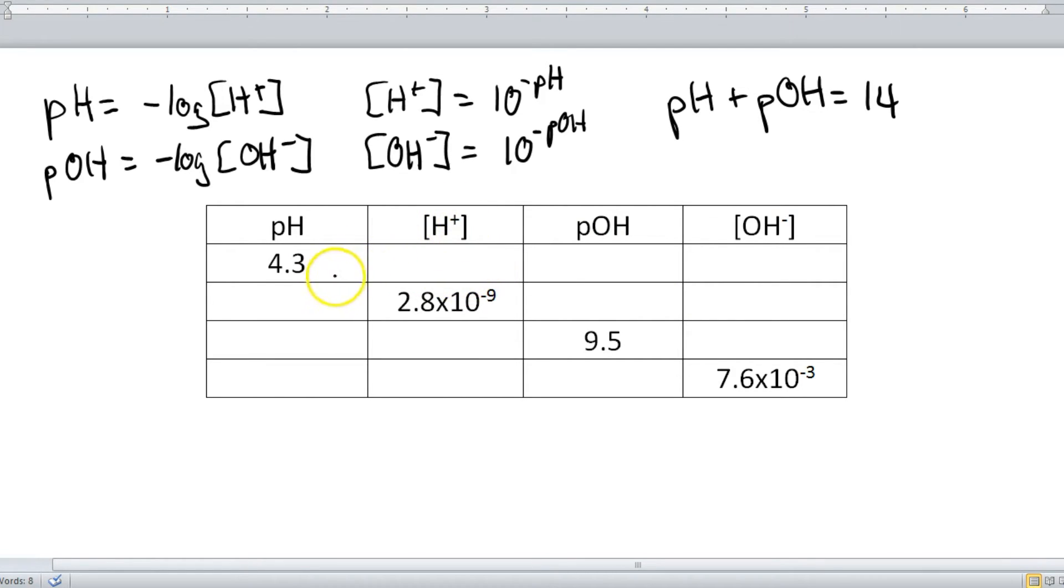So let's start with this first example here. We have a pH of 4.3 and we need to find the hydrogen concentration, the pOH, and the hydroxide concentration. Well, the easiest one to find here is the pOH because pH plus pOH equals 14. So I'm going to simply do 14 minus 4.3.